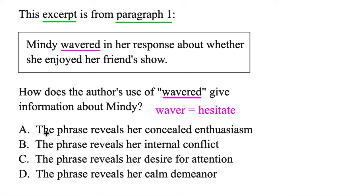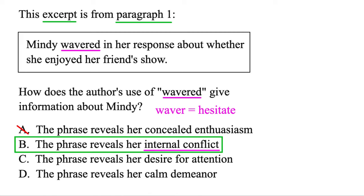So let's see which of these would match. The first one — the phrase reveals her concealed enthusiasm — but if she was enthusiastic she wouldn't have hesitated, so it's not the first one. The next one: the phrase reveals her internal conflict. And if you're conflicted whether to be honest with somebody or not, you may waver or hesitate. So B, that definitely seems like the best option.